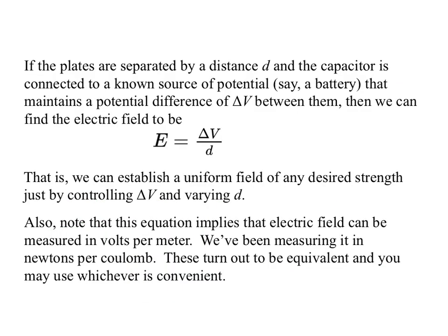If the plates are separated by a distance d and the capacitor is connected to a known source of potential, let's say a battery, that maintains a potential difference of delta V across the plates, or between the plates, then we can find the electric field as just E equals delta V over D. That is, we can establish a uniform field of any desired strength just by controlling delta V and varying D.